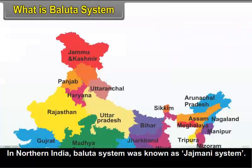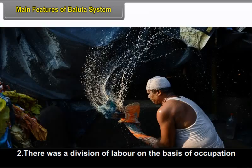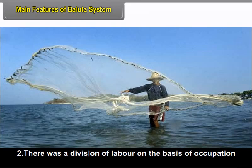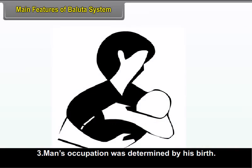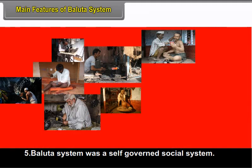In Northern India, the Baluta system was known as the Jazmani system. Main features of the Baluta system: The society was divided into various groups. There was a division of labor on the basis of occupation. A man's occupation was determined by his birth. The life of the people was custom and religion based, and the Baluta system was a self-governed social system.